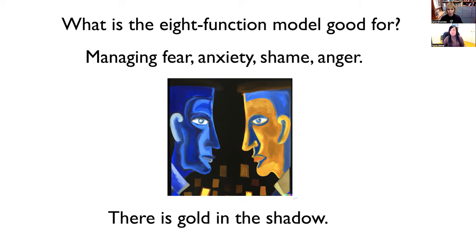She has, as an inferior function, introverted sensing. What does that function do? It monitors the internal world — the internal environment of our memories, our body, our home, our filing cabinets, our finances. It's got all of those qualities. I call it the security function, because introverted sensing is really the guardian for us of all things vital to our security. I found this image of a house made of dollar bills, which combines two of them. People who have introverted sensing up high tend to be very home-body oriented and good with numbers.